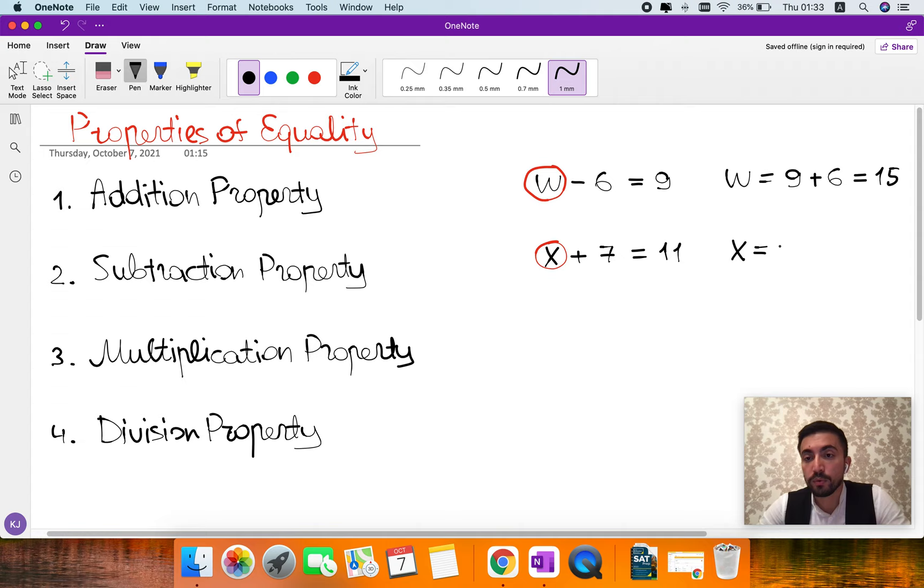So X will be equal to 11 minus 7, which makes 4. The next one is multiplication property.